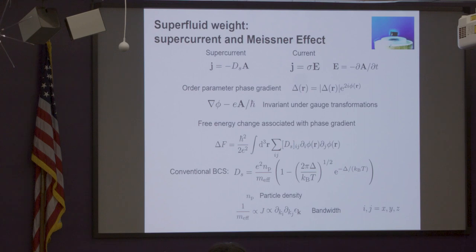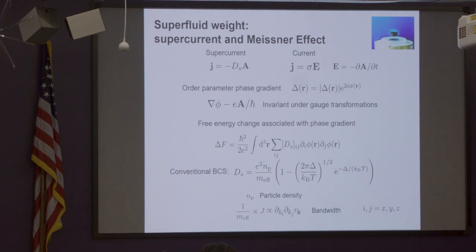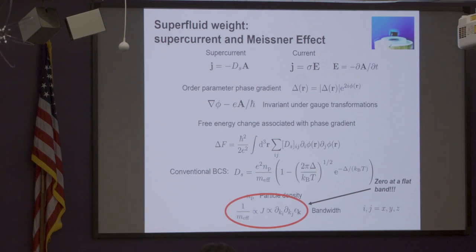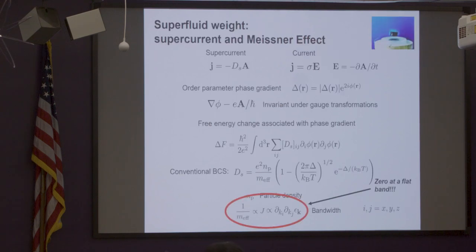In usual BCS theory there is a simple formula for superfluid weight: electron charge, density of Cooper pairs divided by effective mass — very familiar. But there you have the problem: this is zero in a flat band. So it sounds like you had this nice enhancement of pairing temperature but the particles won't move — no supercurrent. But this is only a single-band result.